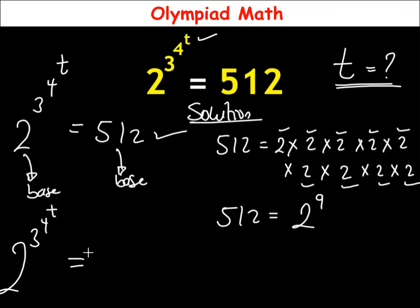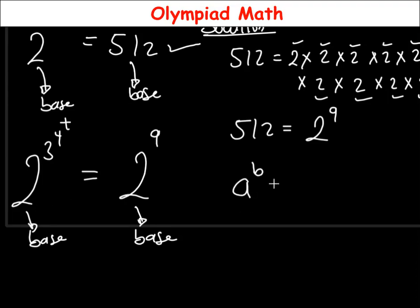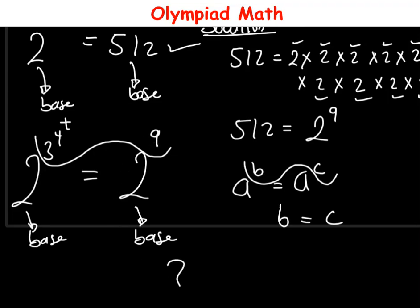So 512 = 2^9. We have now made the bases equal on both sides — 2 on the left and 2 on the right. Applying the rule: if a^b = a^c, then b = c. Since the bases are the same, we compare the exponents, giving us 3 raised to power 4 raised to power t, equal to 9.